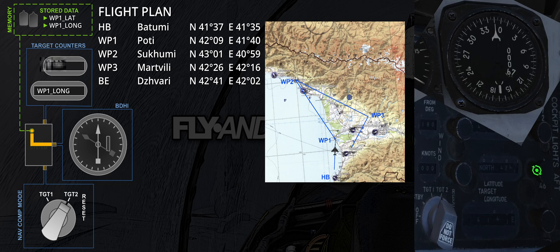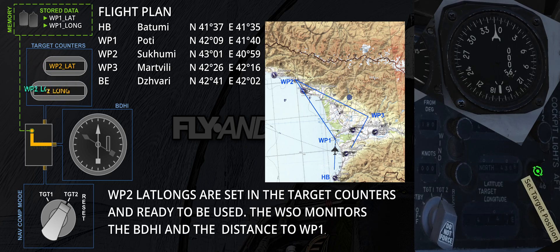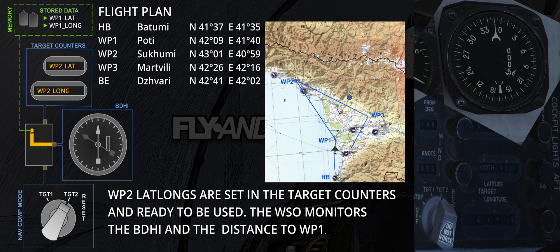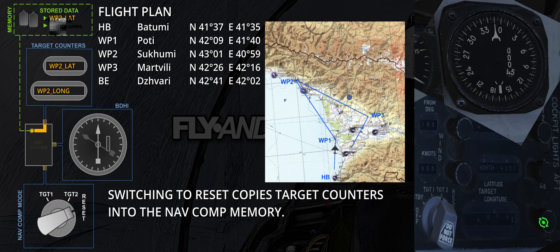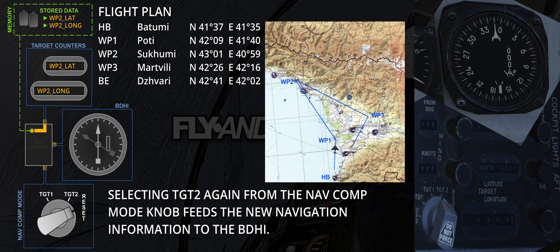At this moment, Target 2 is selected. The NAV computer memory contains the lat-longs of the Sukumi waypoint. The first step is to input the correct coordinates in the target counters. Later, when the F-4 is at the correct distance necessary to ease the turn and not overshoot, the WSO can switch to reset and quickly return to Target 2.